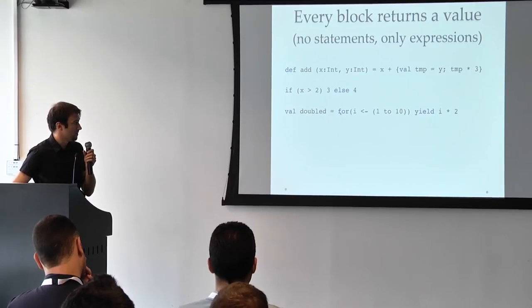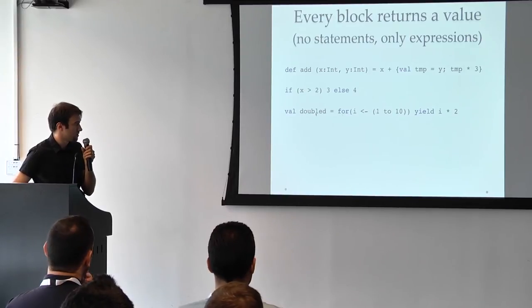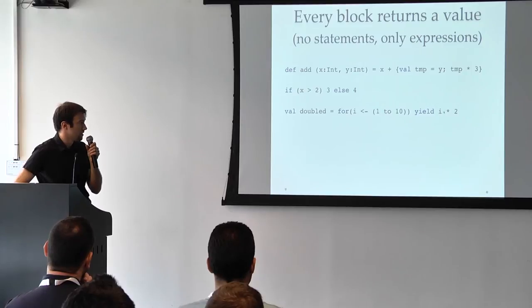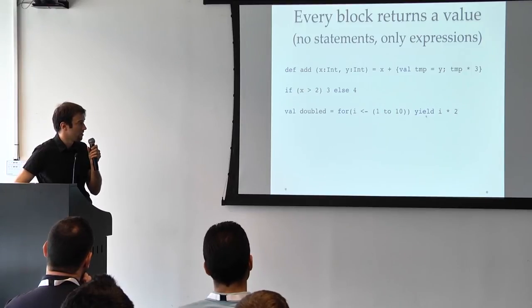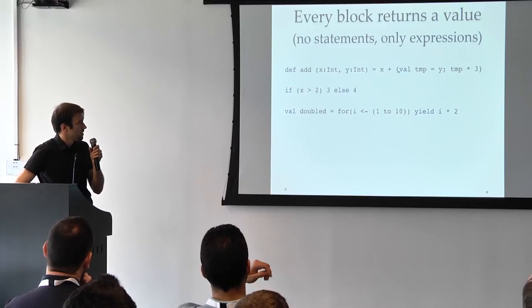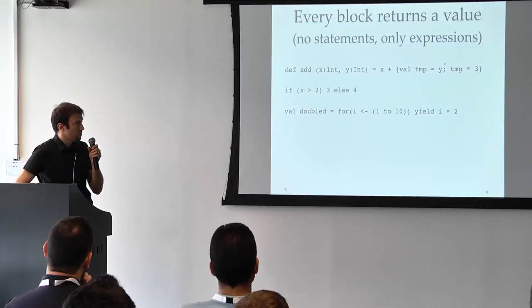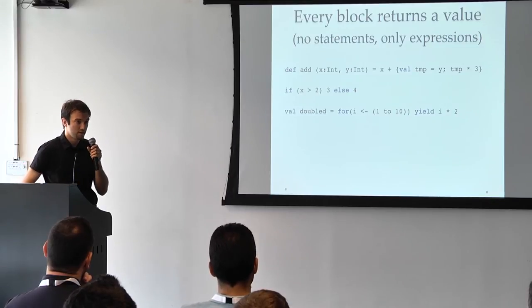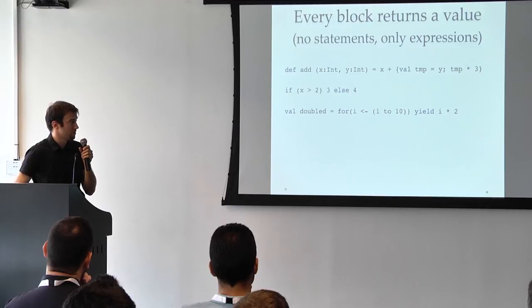So we see that four basically, this expression creates a collection which is two, four, six, and so on. We are basically applying the multiplication by two on every member here. Same here. Here we have a block. So every computation block returns a value. The last expression in the block is the return value.